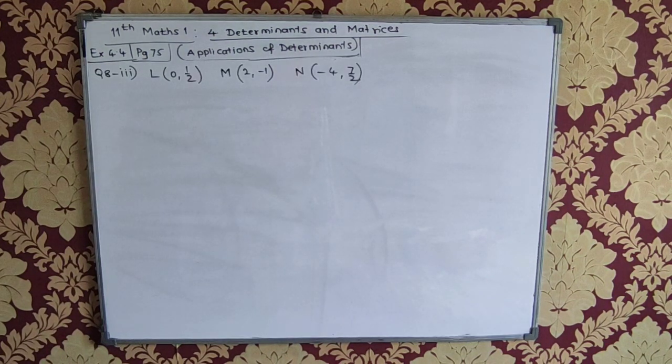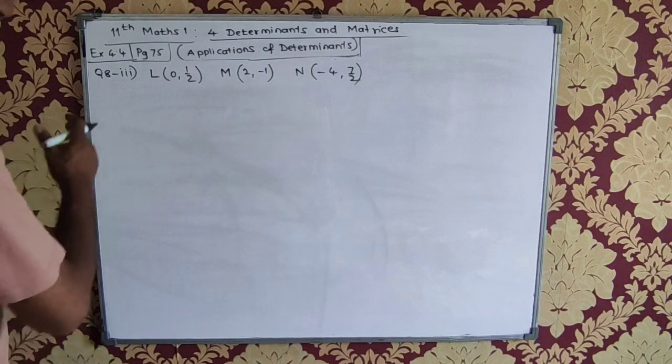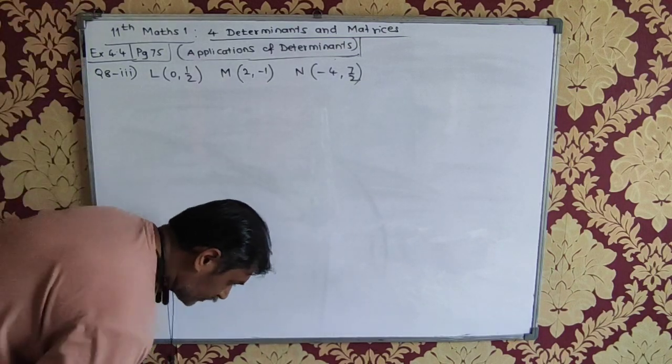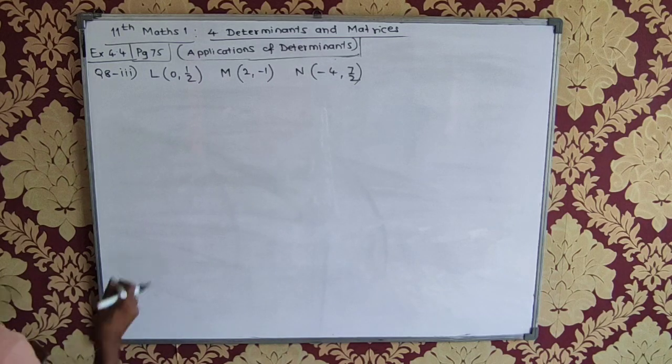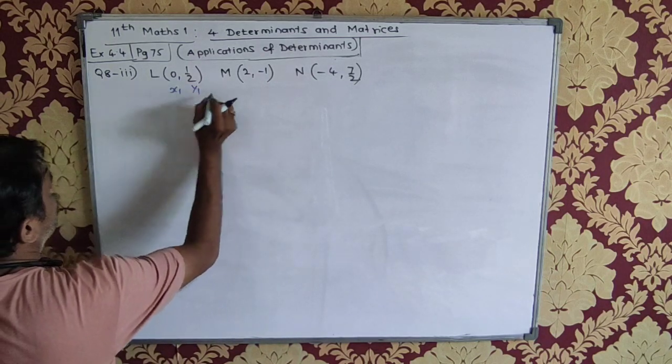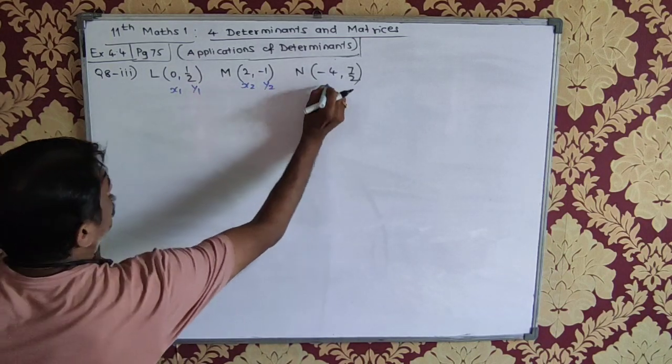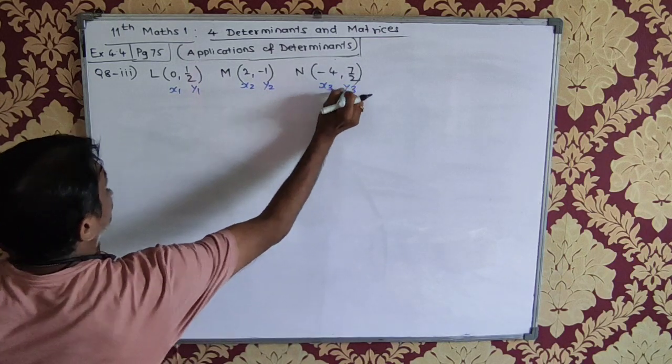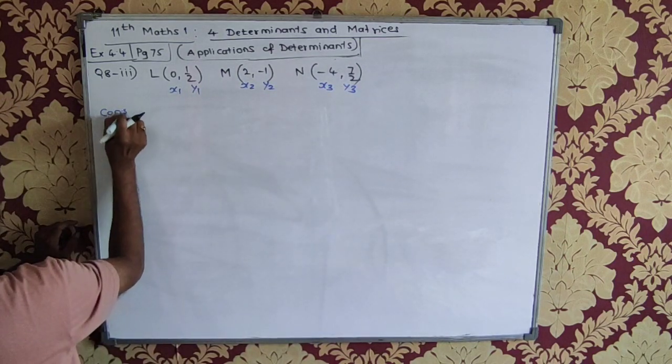The next question. Question number 8.3. Check, examine whether these points are collinear. Once again, this is x1, y1, x2, y2 and x3, y3.